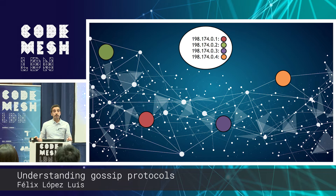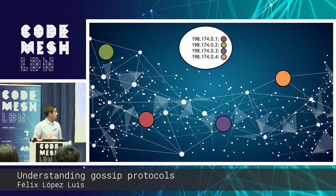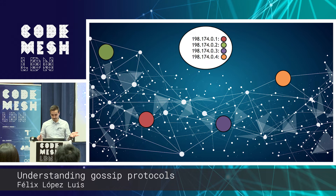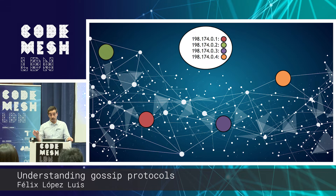We might be tempted to have a centralized server with the list of nodes, so nodes don't need to manage the list. But we'd be in an even worse situation. We still have the scalability problem, and now if there's a network partition or that server is down, none of the nodes can do any work. The ideal situation is one where every node is autonomous and can make decisions on its own — and that's one of the things Gossip Protocols are designed to do.